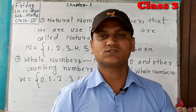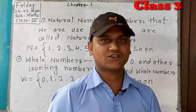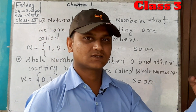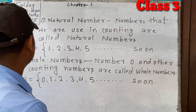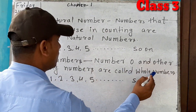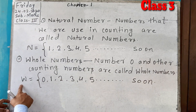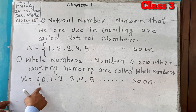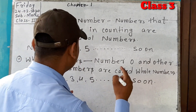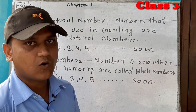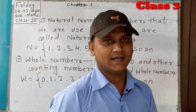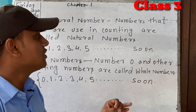Counting numbers are called natural numbers: 1, 2, 3, 4, 5, 6, 7 and so on. Whole numbers include 0 and all counting numbers. It is represented as W. Example: 0, 1, 2, 3, 4, 5 and so on. Natural numbers plus zero gives whole numbers. Students, you can pause this video and note it in your notebooks.